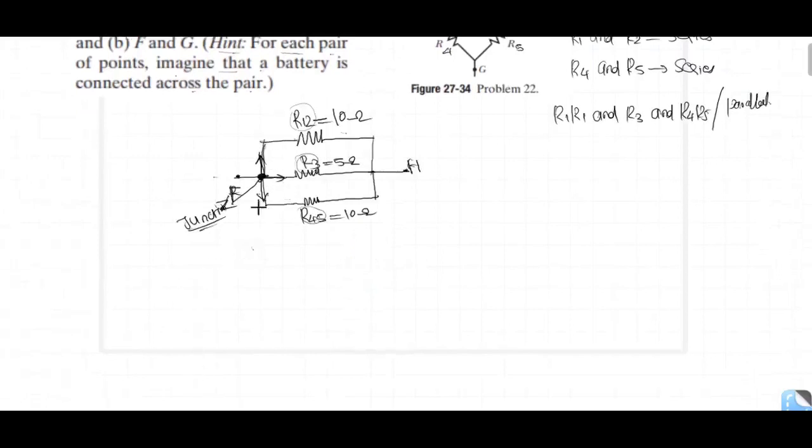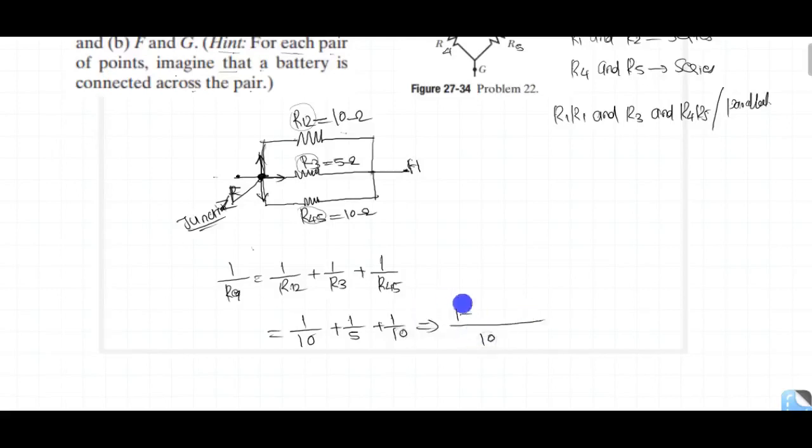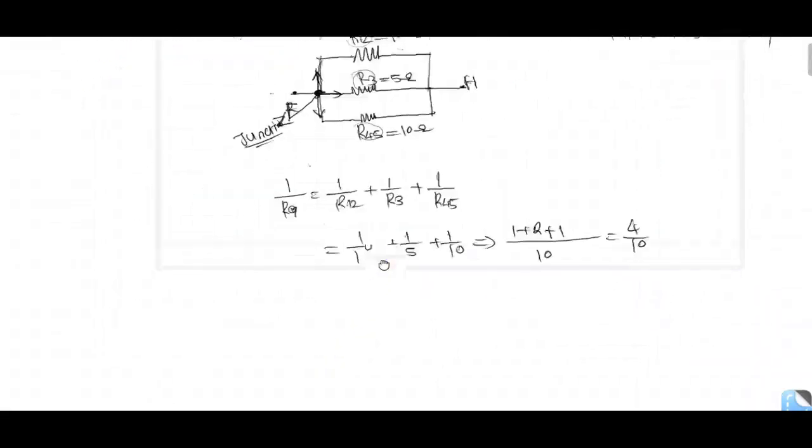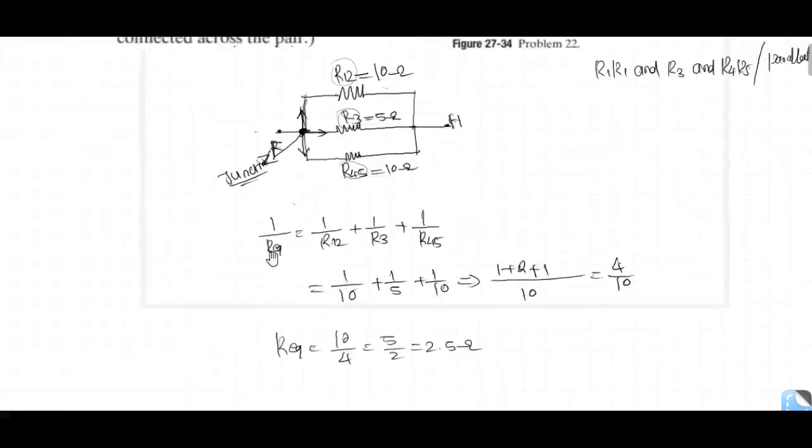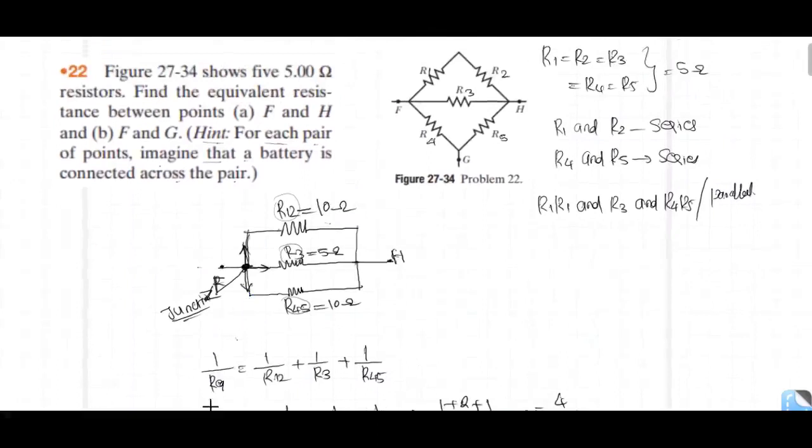All R are in parallel combinations. So find out R equivalent is equal to 1 by R12, 1 by R3, 1 by R45. Substitute the values, 1 by 10 plus 1 by 5 plus 1 by 10. That is 1 plus 2 plus 1, 4 by 10. 1 by R equivalent is equal to 4 by 10. So R equivalent is equal to 10 by 4, given by 5 by 2, given by 2.5. So finally we get the equivalent circuit resistance between the point F and H.